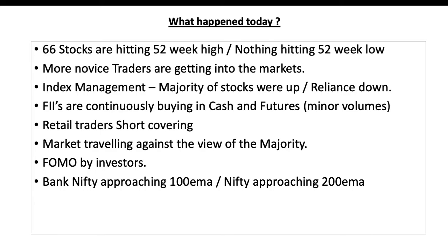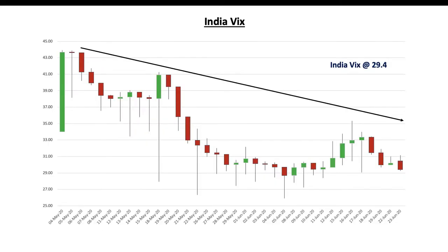Nifty has already crossed the 100 EMA and is now approaching the 200 EMA. Bank Nifty is a little laggard and is just approaching the 100 EMA. Coming to India VIX: as I said, this is the first indicator we look at for any trend reversal on the downside. It went to around 31 levels this morning and then started going down, closing below 30 — now at 29.4. Look for some bottoming out in India VIX around 25 to 27 levels before making any reversal in the uptrend.